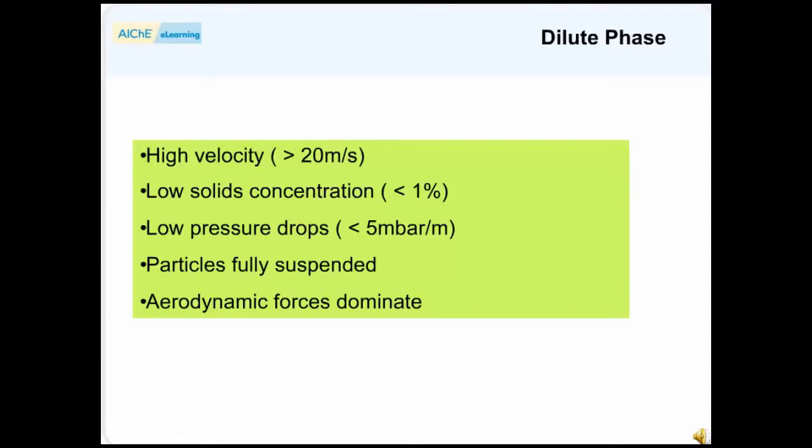Dilute phase flow, in its most recognizable form, is characterized by high gas velocities, usually greater than 20 meters per second.